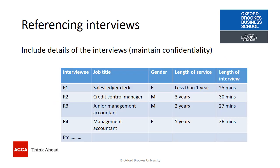If you're referencing interviews, you want to include the details of the interviews but maintain the confidentiality of the people you've spoken to. We give every interviewee a code — R1, R2, R3 — meaning respondent 1, respondent 2, respondent 3. You also want to provide the reader with some information about who you interviewed. Maintaining confidentiality, you provide a description of the job title.